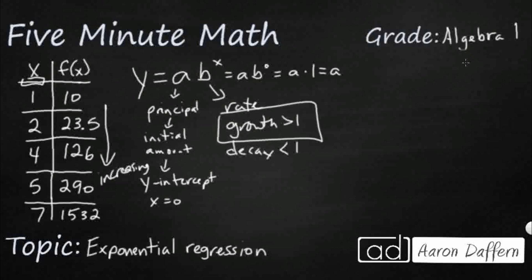So I know that it's going to be y equals a is going to be somewhere between 0 and 10. And we know that this b term is going to be greater than 1 because it's increasing. And then we'll take it to the x power.